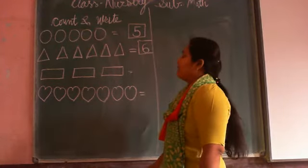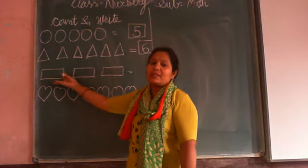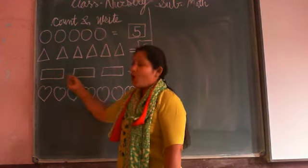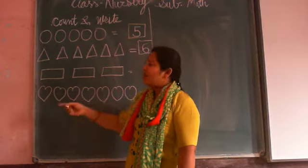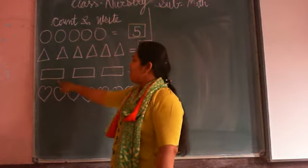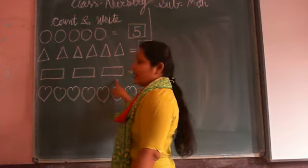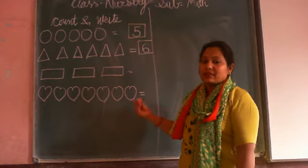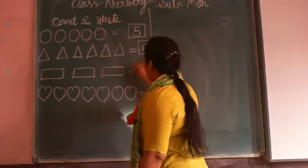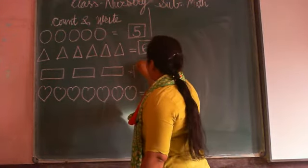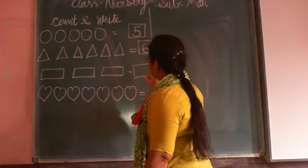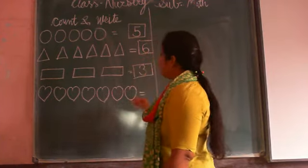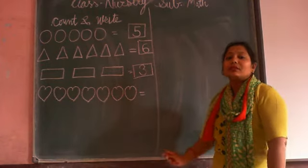Then which shape is this? Rectangle. Now how many rectangles are here? One, two, three. How many rectangles? So here we write number three. Two half curves make number three.